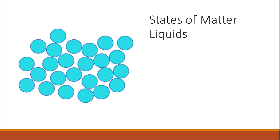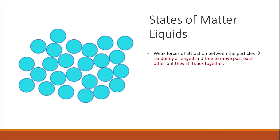The second state is the liquid. Liquids have weak forces of attraction between their particles. They are randomly arranged. Although they are randomly arranged and they have weak forces of attraction, they are still stuck together. This is why they have a definite volume, but they have different shapes — they don't have a specific or definite shape. They take the shape of any container they are contained in.